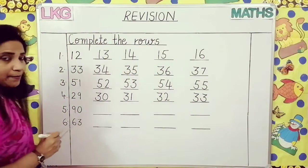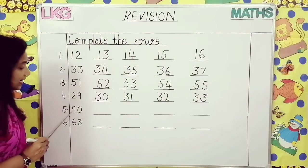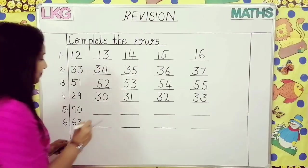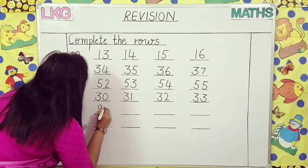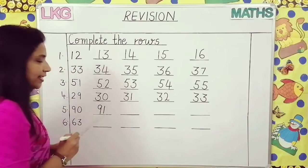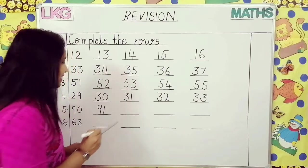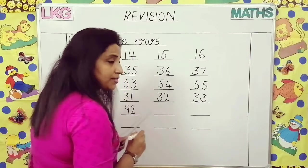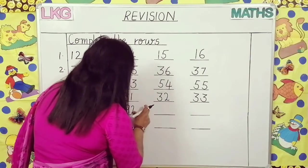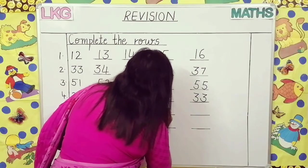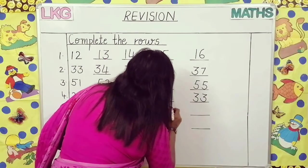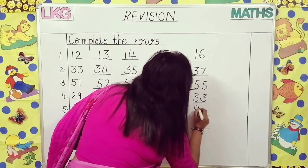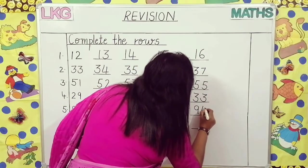Now come to the next number. Which number is this? Ninety. What comes after ninety? Ninety-one. After ninety-one? Ninety-two. After ninety-two? Ninety-three. After ninety-three? Ninety-four.